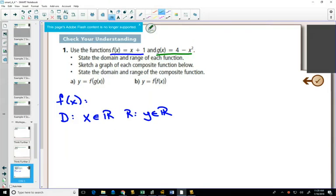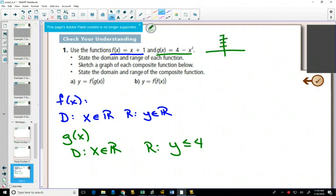For g of x, any non-permissible values? No, the domain is everything. The range, you're going to have to use your transformations. It would be a parabola that's flipped down and then shifted up 4. So, your range is less than or equal to 4. Right? Are we okay with that graph? Shifted up 4, parabola pointing down for g of x.